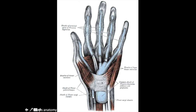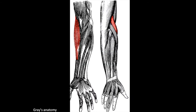The flexor tendons are covered by the transverse carpal ligament, also known as the flexor retinaculum. Also note that the tendon sheath of the flexor tendons extends distally to the level of the distal phalanges of the thumb as well as the second through fifth digits. Another important muscle within our field of view on MRI of the wrist is the brachioradialis, which begins along the lateral aspect of the distal humerus and inserts towards the base of the radial styloid process.